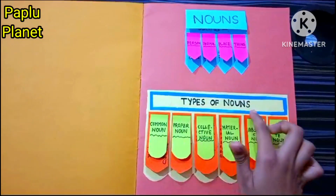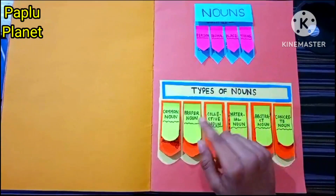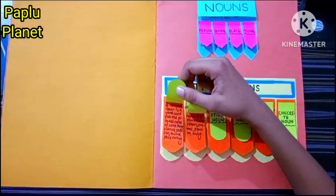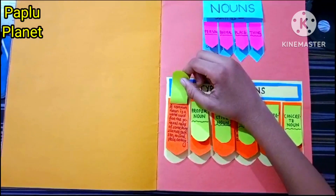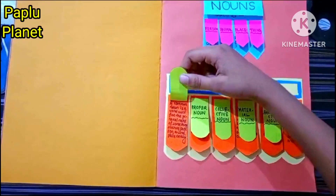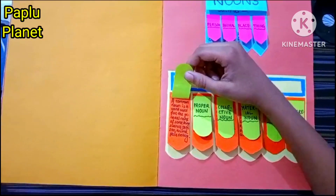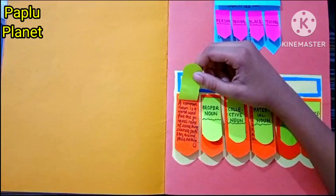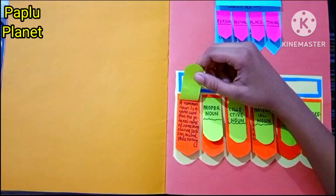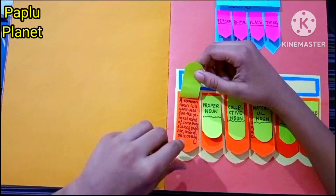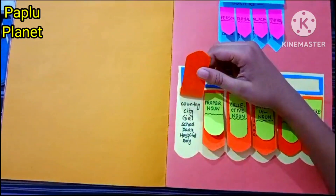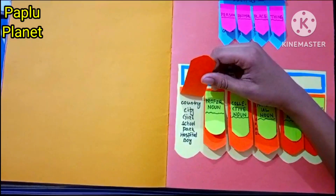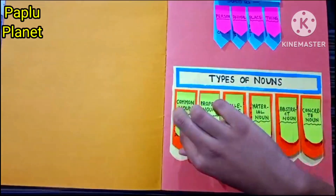Types of nouns. There are six types of nouns. Common noun: a common noun is a word used for the general name of something such as a person, animal, place or thing. For example: country, city, girl, school, park, hospital, boy.